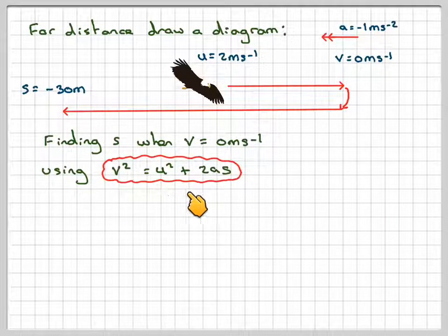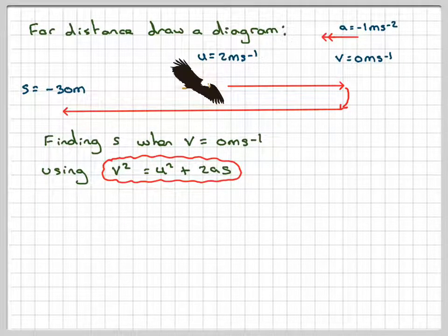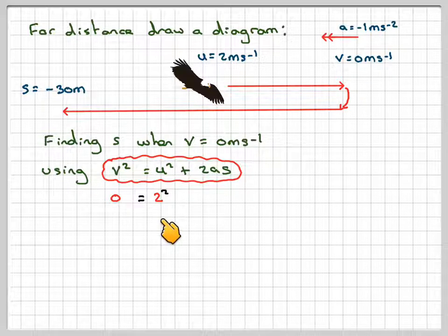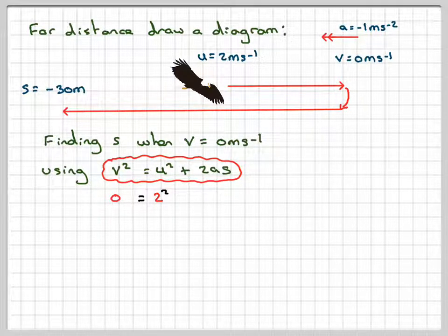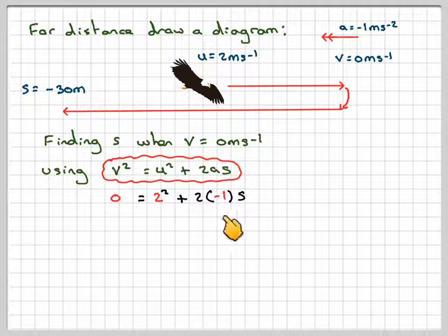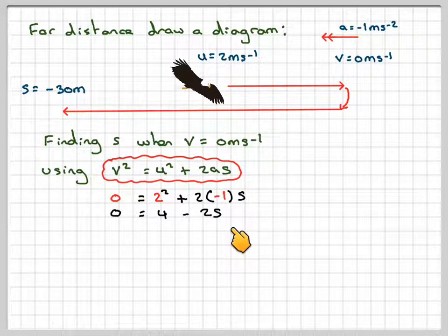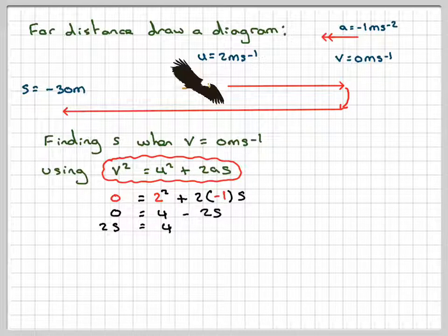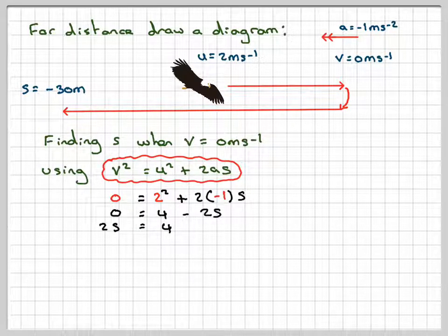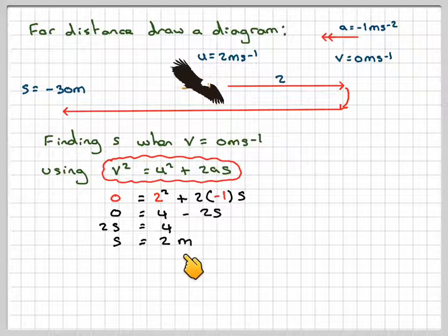Using V squared is equal to U squared plus 2AS. We have that 0 will be equal to 2 squared plus 2 times minus 1S. So we're going to have 0 is equal to 4 minus 2S. 2S is equal to 4, therefore S is equal to 2.